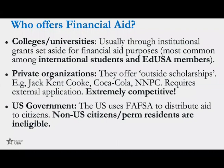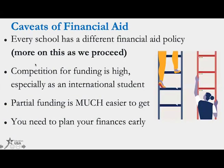Private organizations like the Coca-Cola Scholarship in America exist, but international students are not eligible. You may also have heard of the NNPC, which is a Nigerian scholarship. The US government also gives financial aid, but only to US citizens and permanent residents. So if you are not a citizen or permanent resident, forget US government money — we're targeting colleges and universities.